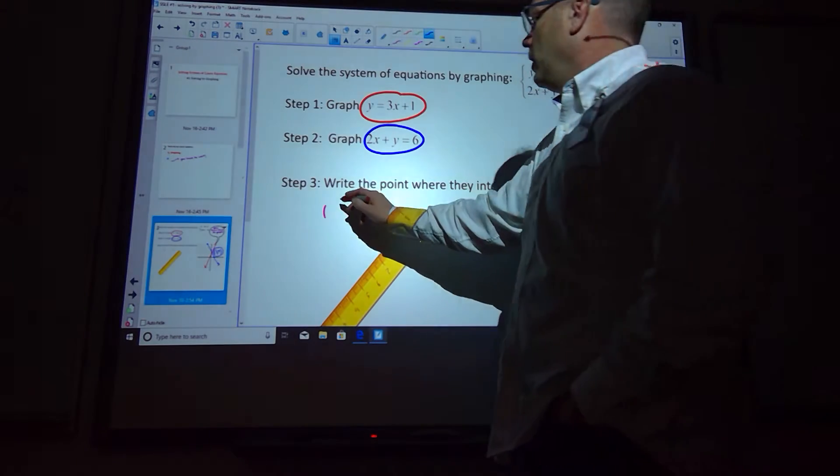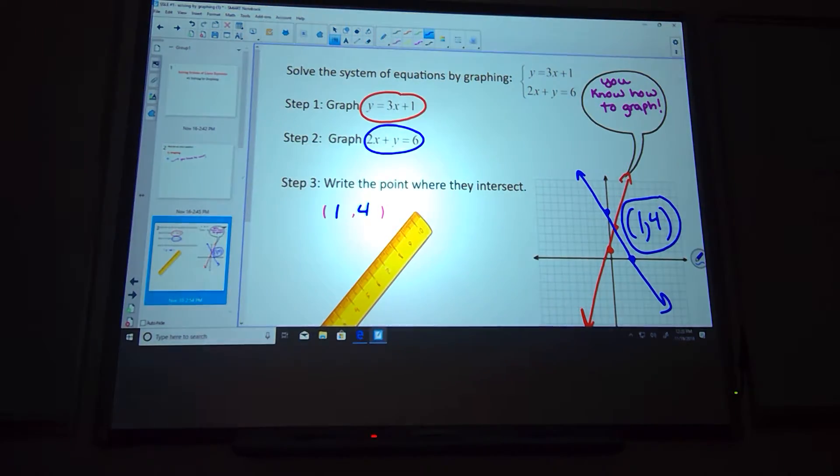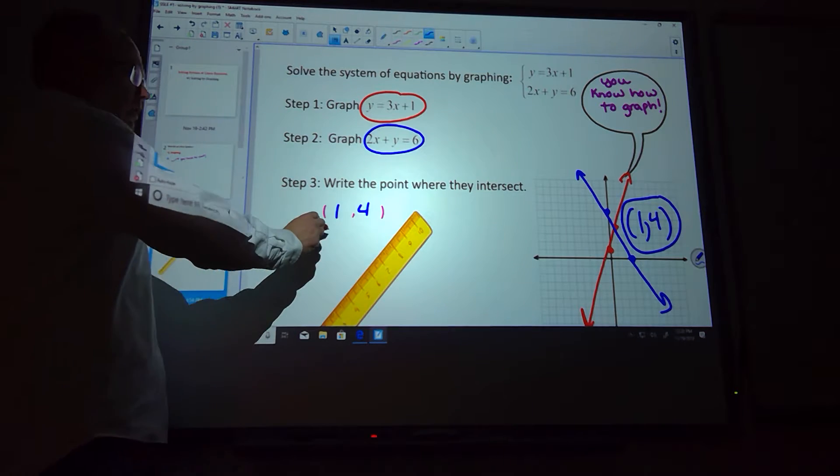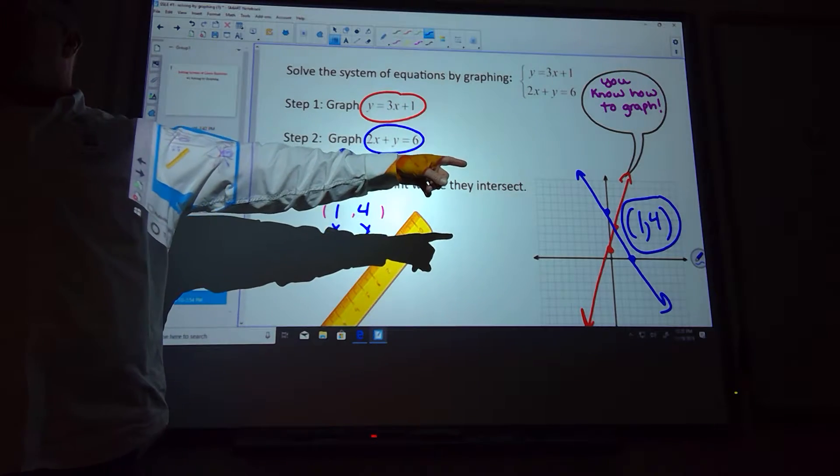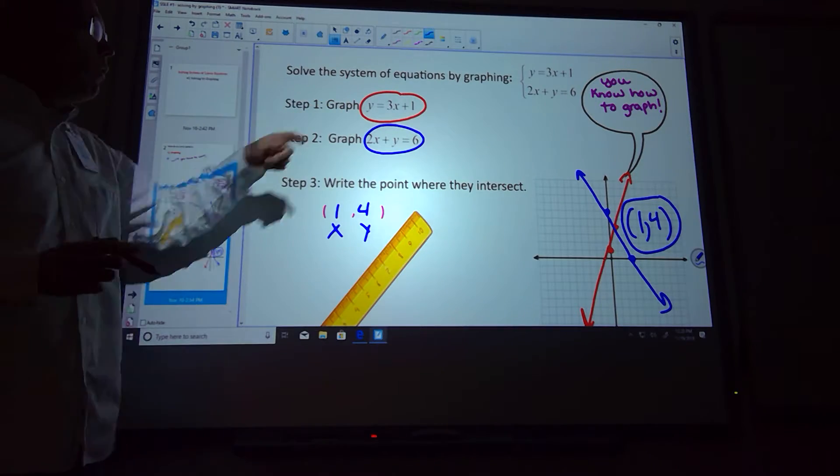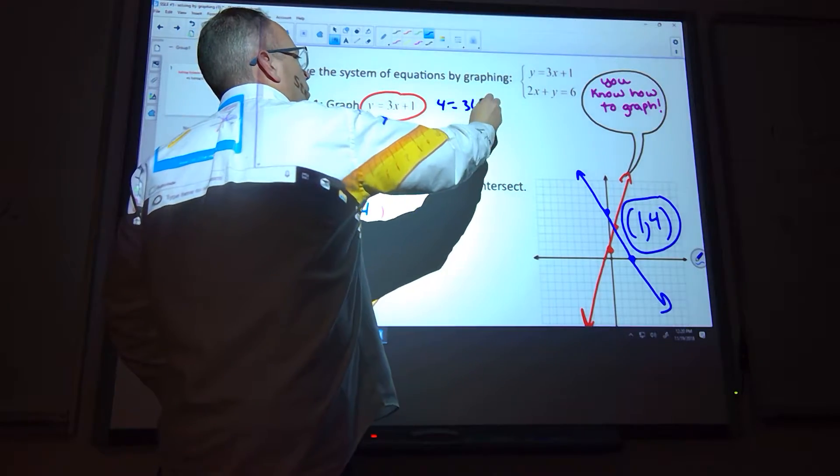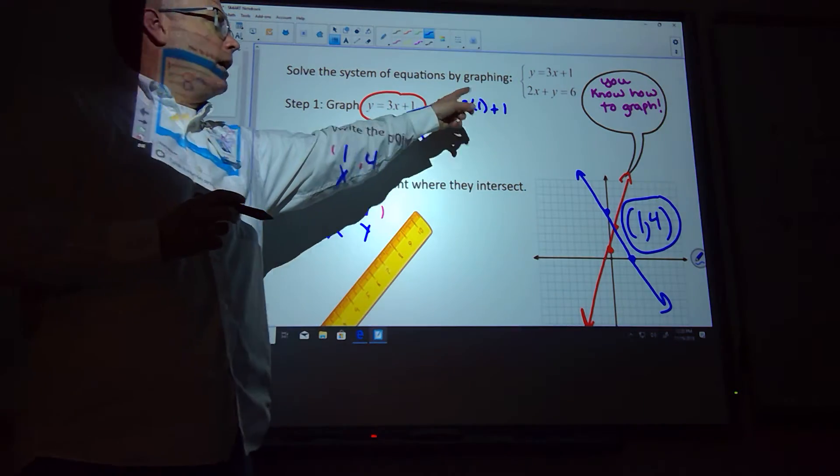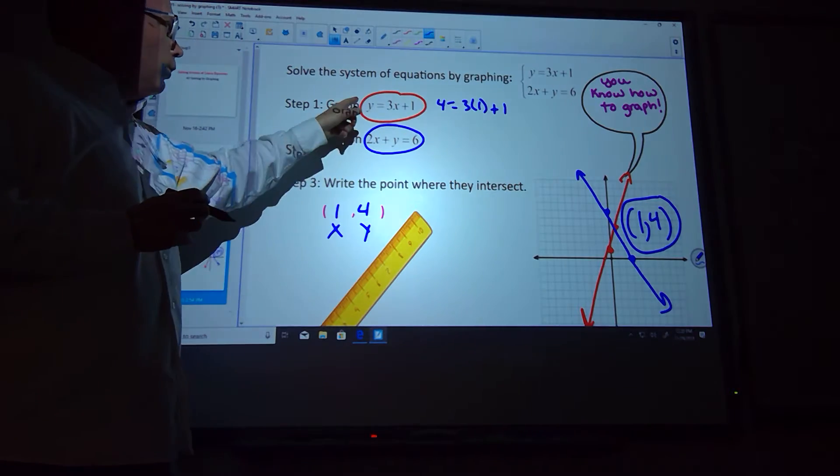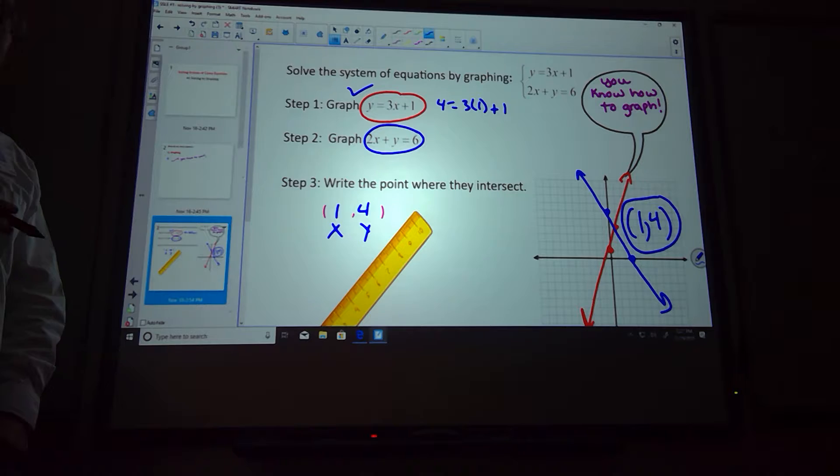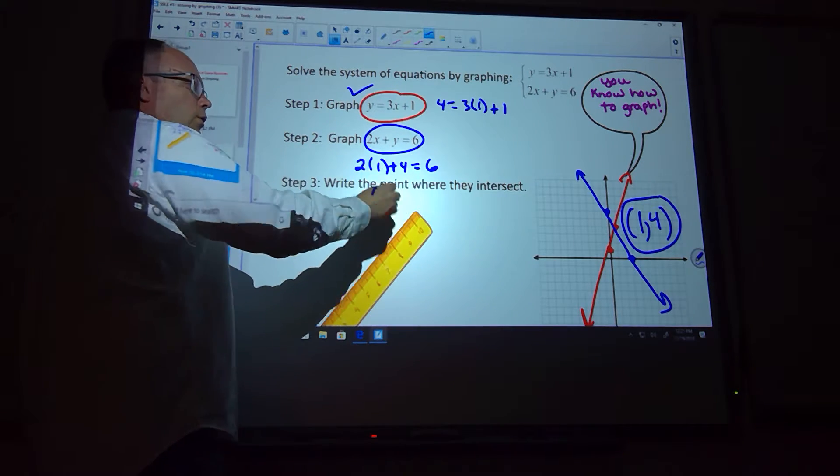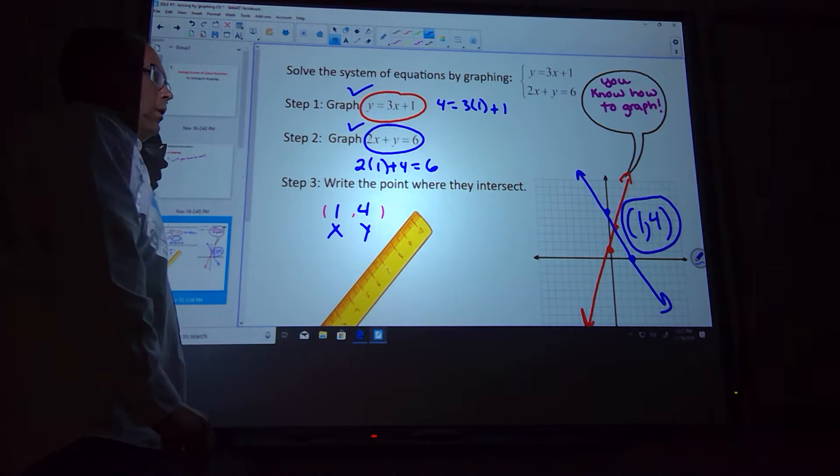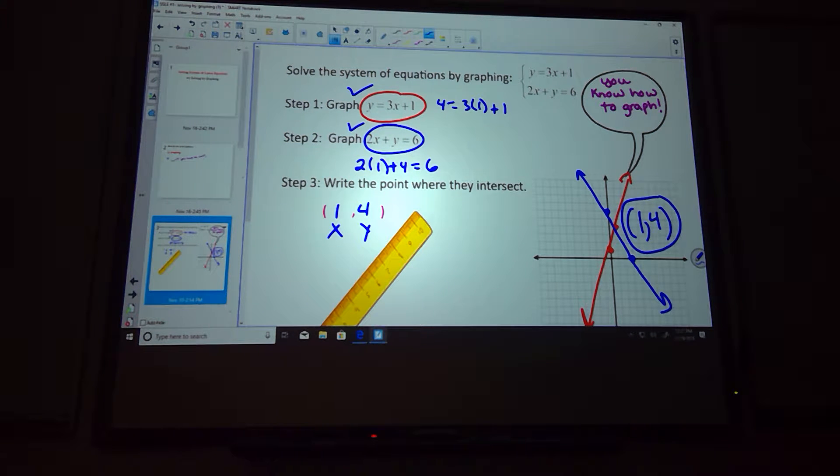Is this an x value? Is this a y value? So in order for this to work, this point has to exist on both of my lines. So if I take x, y and plug it in, I'm going to get 4 equals 3 times 1 plus 1. Well, what's 3 times 1? Three. What's 3 plus 1? Four equals four. So this point is indeed on this one right here. Let's see if it works on this one. So same idea. Plug it in. 2 times 1 plus 4. So 2 times 1 is 2. 2 plus 4 is 6. So it's also on that one. So that is indeed our solution.